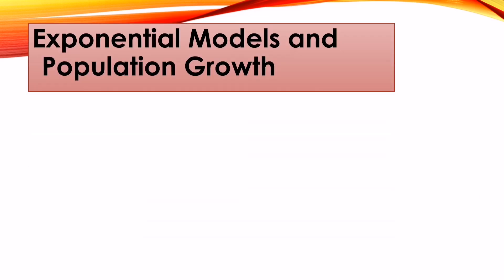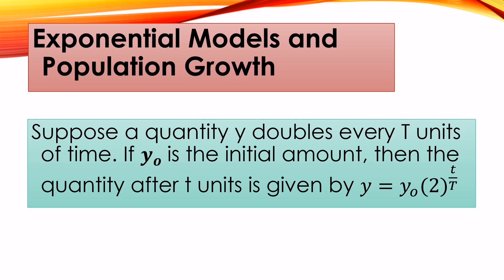Let us start with exponential models and population growth. Suppose a quantity y doubles every T units of time. If y₀ is the initial amount, then the quantity after t units of time is given by y = y₀ · 2^(t/T). The base is 2 because the quantity doubles. If it triples, we would use 3. The capital T represents the unit of time.